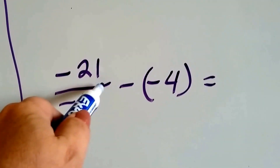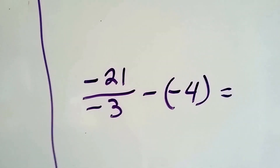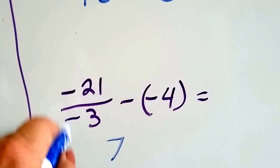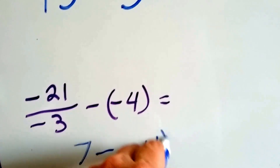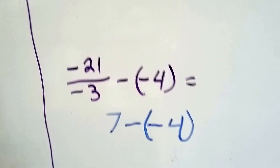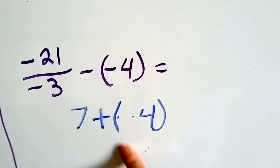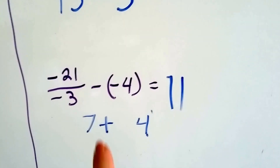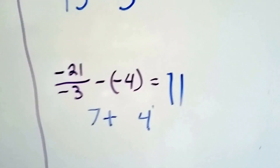We've got negative 21 divided by negative 3. Remember, fractions are just little mini-division problems. So this is 21 divided by 3. 3 times 7. Because they're both negatives — like signs — it's going to be positive 7. So now we have positive 7 minus negative 4. When we subtract negative integers, we add the opposite — so that turns into a plus sign and negative 4 becomes positive 4. So now we just have 7 plus 4, which is 11.